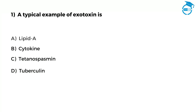The first question is: A typical example of exotoxin is. Option A, Lipid A. Option B, Cytokine. Option C, Tetanospasmin. Option D, Tuberculin. You have got 7 seconds — if you know the answer, mention it in the comments.